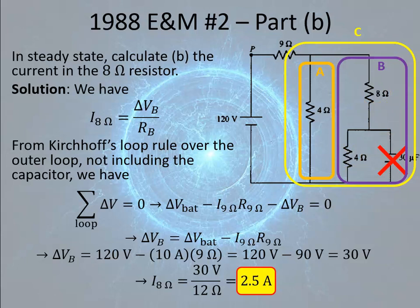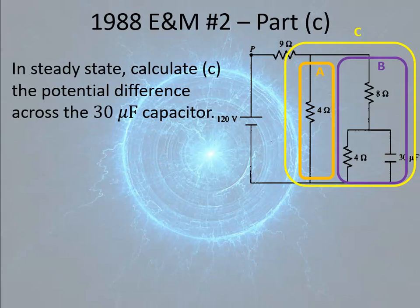They gave two points for getting the 30 volt potential difference across Section B, and one point for correct application of Ohm's Law to get 2.5 amps. They also offered an alternate solution: you could use the ratio method and realize the current through the 8 ohm resistor must be one quarter of the current through the 9 ohm resistor, getting 2.5 amps from that.